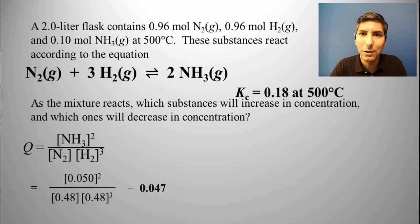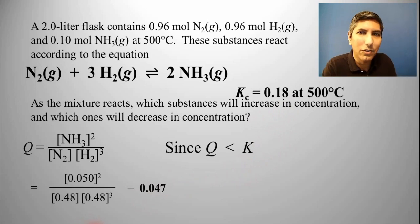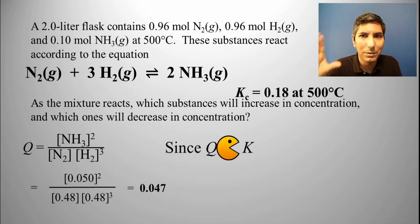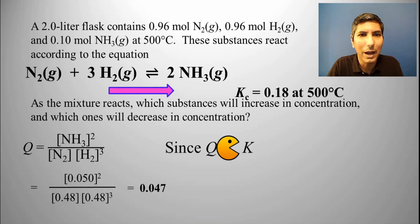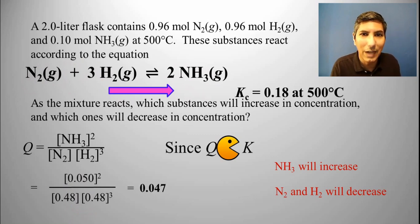Now let's compare Q versus K. Q (0.047) is less than K. Using the Pac-Man trick, the Pac-Man is moving to the right, so the reaction is going to proceed toward the right. That means we're going to increase the amount of ammonia present, and the amounts of nitrogen and hydrogen are going to decrease.